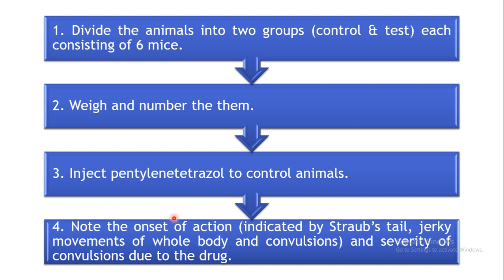Individually observe each animal carefully to determine the onset of action of this drug. Since PTZ is being used as an inducing agent, observe each animal to find out the onset of convulsions, which may be indicated by Straub's tail or jerky movements of the whole body. Note down the onset of convulsions, and also record the severity and nature of convulsions seen in all six animals of the control group.